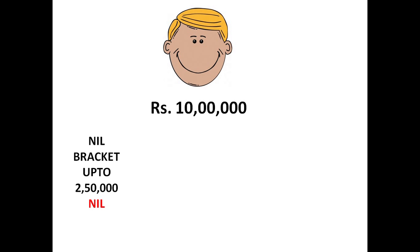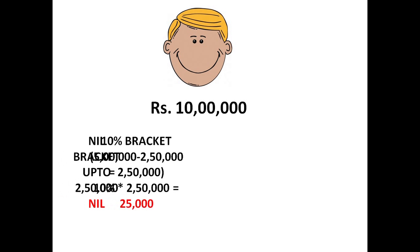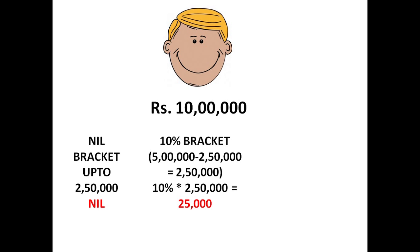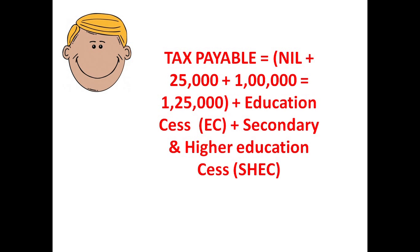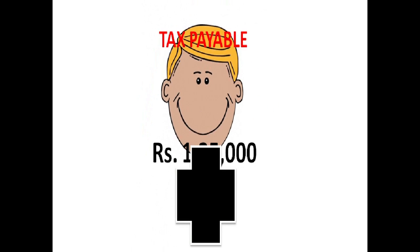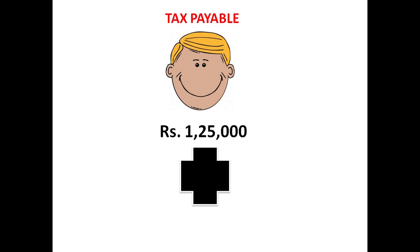Up to ₹2,50,000, the tax liability will be nil. At the 10% bracket, his income tax liability will be ₹25,000. For the 20% bracket, his tax liability will be ₹1,00,000. When we add all of these, we get the tax payable, on which we also need to add the Education Cess and the Secondary and Higher Education Cess, which amounts to ₹1,250.